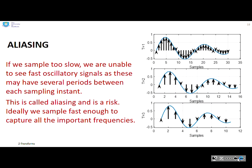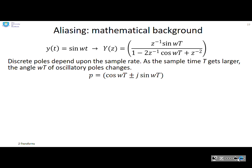The final topic to cover is aliasing. If we sample too slowly, we are unable to see fast oscillatory signals, as these may have several periods between each sampling instant. This is called aliasing and it's a risk. Ideally, we sample fast enough to capture all the important frequencies.